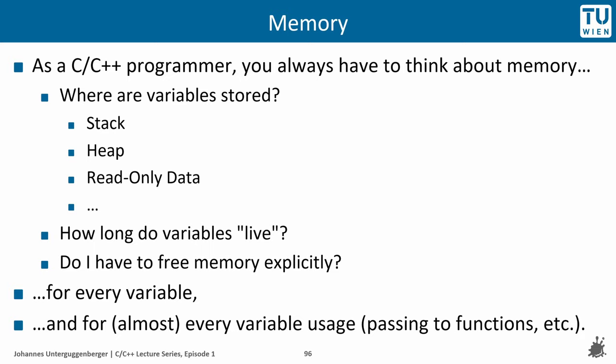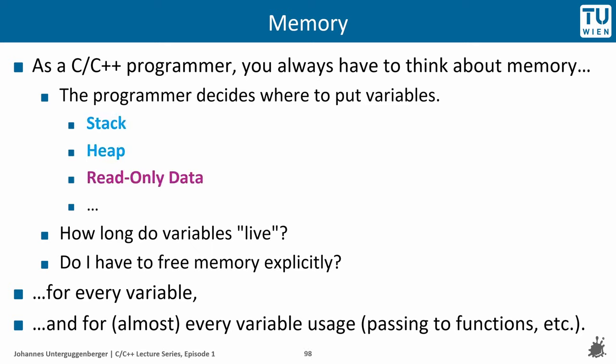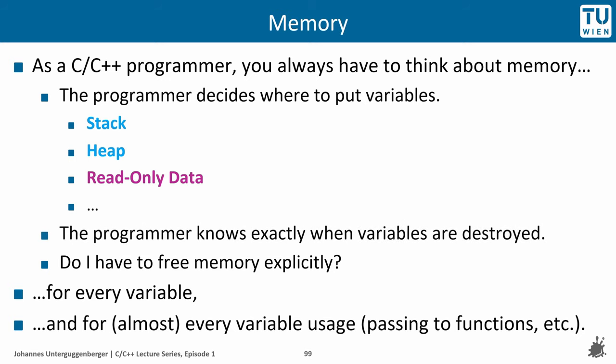Summing up, we have seen that a C or C++ programmer has to think about memory all the time. We now know where variables are stored, which, depending on our usage of said variables, can be on the stack, on the heap, or we could also be using memory from the read-only data section. In C and C++, we know exactly how long variables live and when they are destroyed. If we have allocated memory, we must also free it. And we make these considerations for every variable and whenever we use a variable or pass it around.